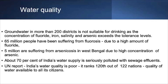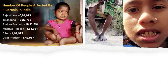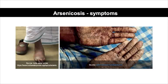About 70% of India's water supply is seriously polluted. The United Nations report on India shows that water quality is very poor — it ranks 120th out of 122 nations in the quality of water available to its citizens. The number of people affected by fluorosis is very high in many states, especially Rajasthan and Telangana, creating serious health impacts from consumption. Similarly, arsenicosis in West Bengal due to arsenic contamination in water is creating different health impacts among local people.